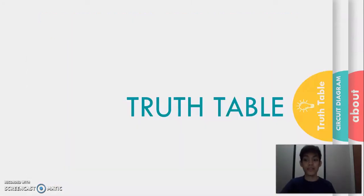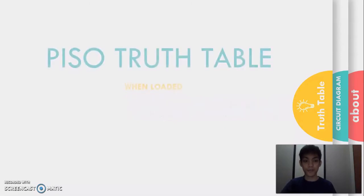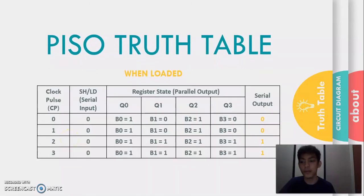Before we get into the sample outcomes, let us first discuss the truth table of a parallel in serial out shift register. Presented on screen is a truth table of parallel in serial out shift register when the serial input is loaded, or is zero.